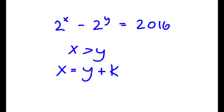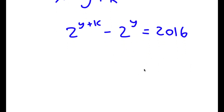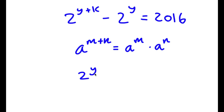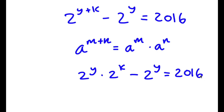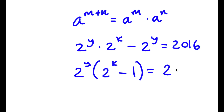If I replace x with y plus k, I get 2 to the power of y plus k minus 2 to the power of y equals 2016. Now, a to the power of m plus n equals a to the power of m times a to the power of n, so 2 to the power of y plus k equals 2 to the power of y times 2 to the power of k. I can factor out 2 to the power of y: 2 to the power of y times (2 to the power of k minus 1) equals 2016.